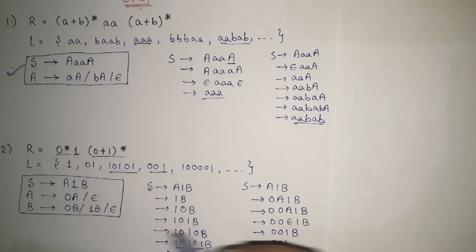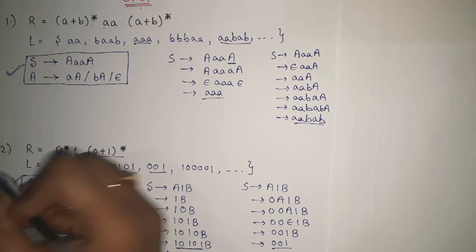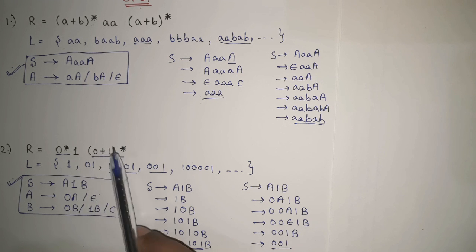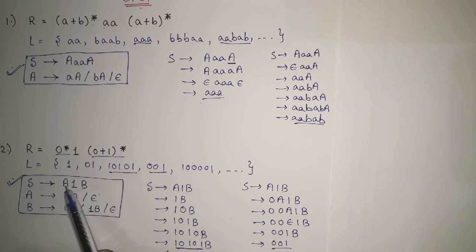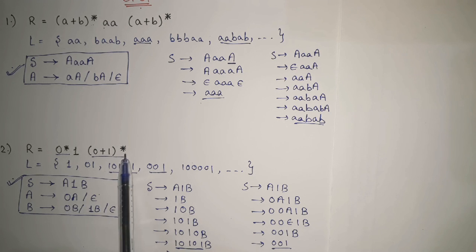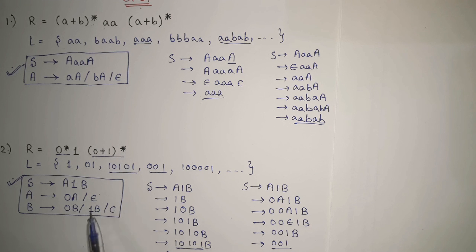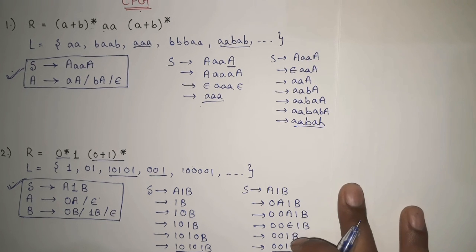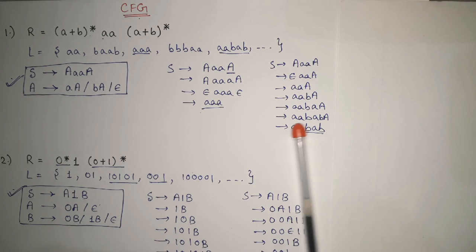To summarize: you have to start with whatever is compulsory in the first production. Whatever has zero or more occurrences — wherever you have star — you write another variable for it, and write that variable's own productions to generate what is needed. If there is star — zero or more occurrences — then null (ε) will also be part of your RHS. These are the key things to remember. This is an easier topic. Thank you so much.